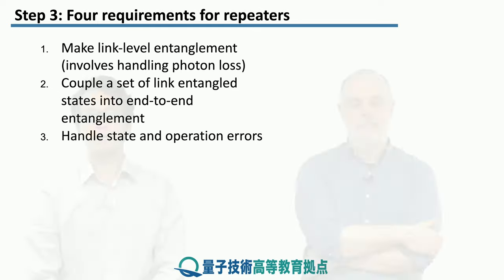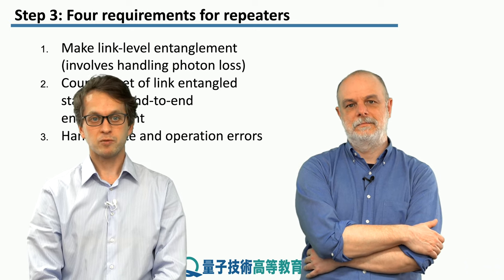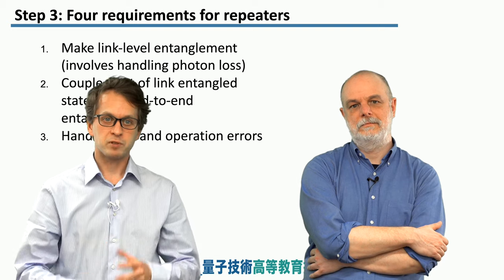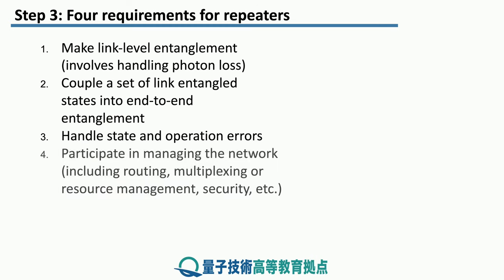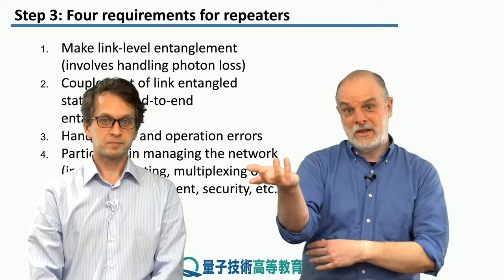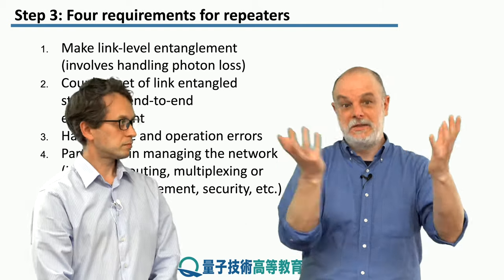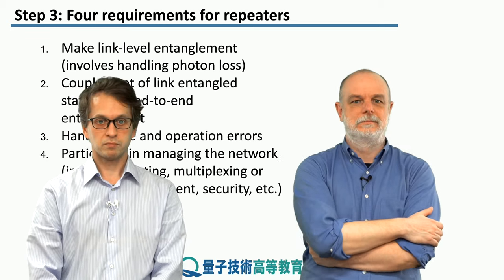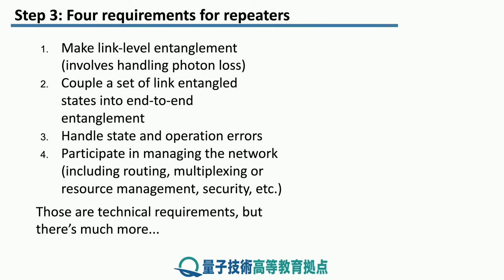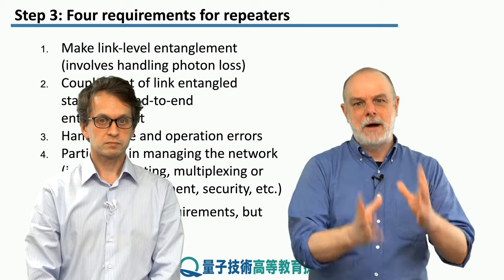The third thing is handling state and operation errors. We saw examples using unitary errors in our calculations, but there are also other types of errors, and the main protocol we used was purification. The fourth and last thing is thinking more in terms of networking: how to handle routing, how to handle multiplexing when there's contention for resources, and how to manage all of these things including security — the routing protocol, the multi-level system, the internet, and related topics covered back in lesson 12.